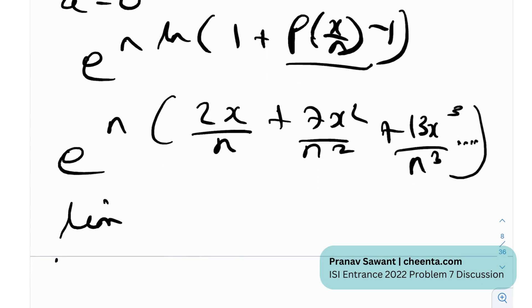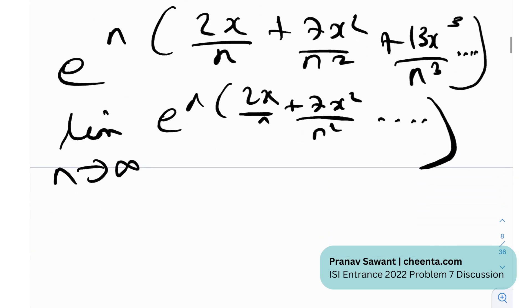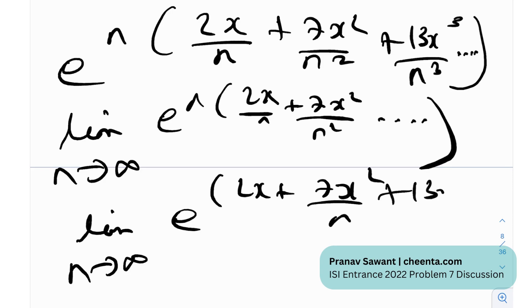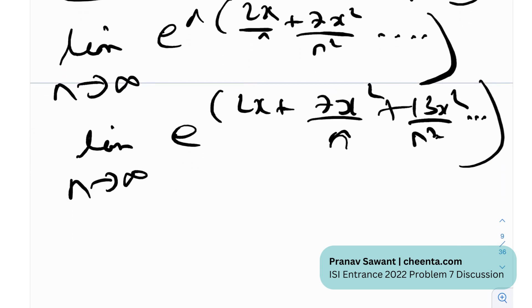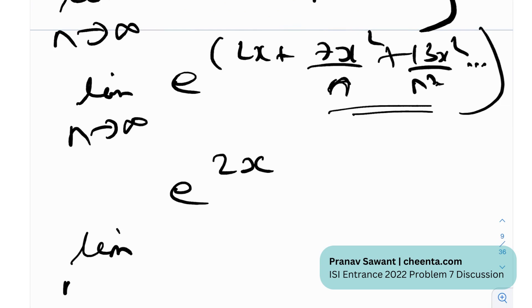And now, if you take limit as n tends to infinity of this, which is asked in the question, you would essentially get the limit as n tends to infinity of e raised to the power... Now, like I explained before, if we have a quantity tending to infinity on the denominator, all of these things would be equal to 0. That essentially just leaves us with e to the power 2x, which would be the correct answer. Therefore, the limit as n tends to infinity of [P(x/n)]^n is equal to e^(2x), which is the correct solution.